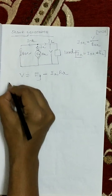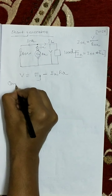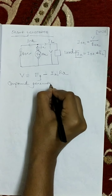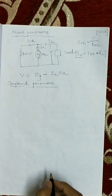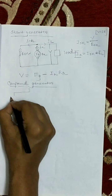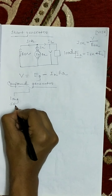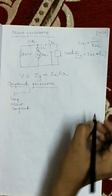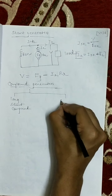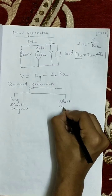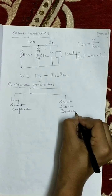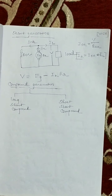Now we will discuss about compound generator. Compound generators are of two types: long shunt compound and short shunt compound.